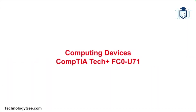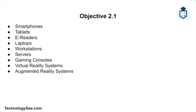What's up everybody, this is Tech G back with another video to help you successfully pass the CompTIA Tech Plus certification exam. In this video we're going to cover the purposes of various computing devices — specifically smartphones, tablets, e-readers, laptops, workstations, servers, gaming consoles, virtual reality systems, and augmented reality systems. Each of these devices serves a unique role in modern computing and understanding them is fundamental to your success on the exam.